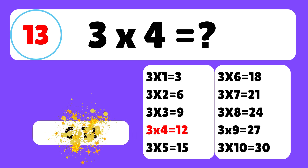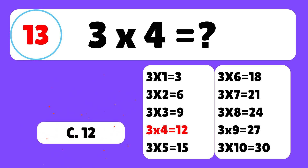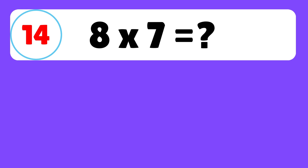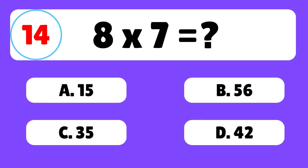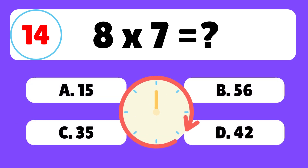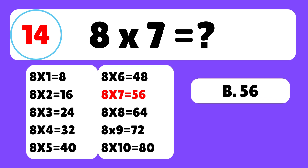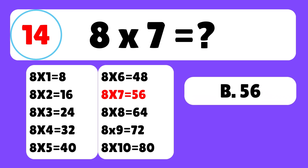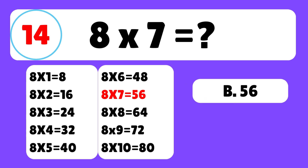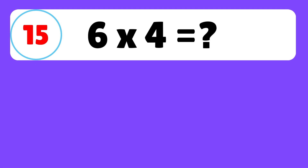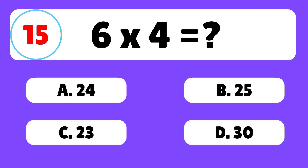Question thirteen: what is three times four? The answer is C — three times four is equal to twelve. Question fourteen: what is eight times seven? The answer is B — eight times seven is equal to fifty-six.